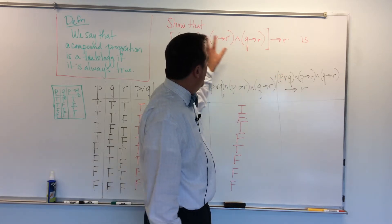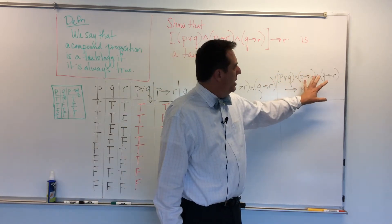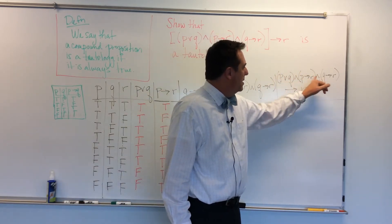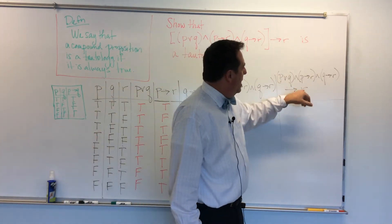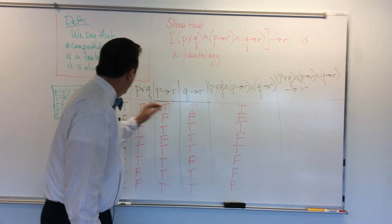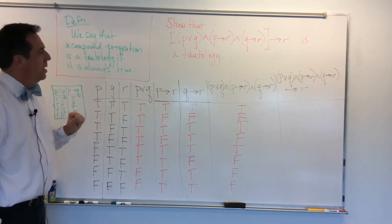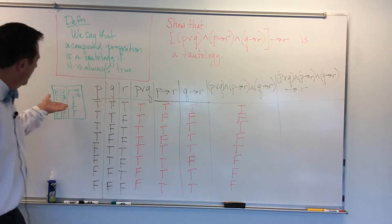So here, I have, I'm going to actually do it on this side because I think I'm running out of room. Here is my big, ugly mess, which is a conditional that has as this hypothesis, this big, ugly piece right here. Alright, so. And then here's my conclusion, which is R.